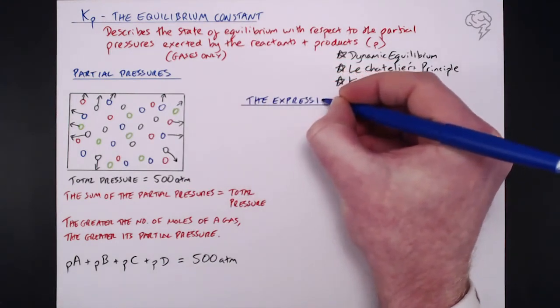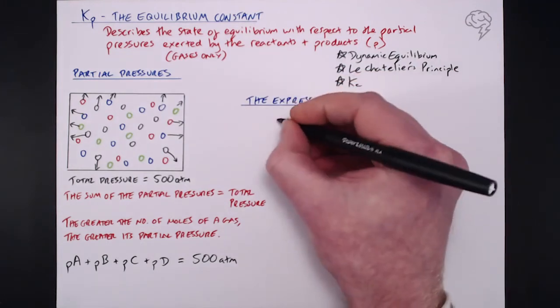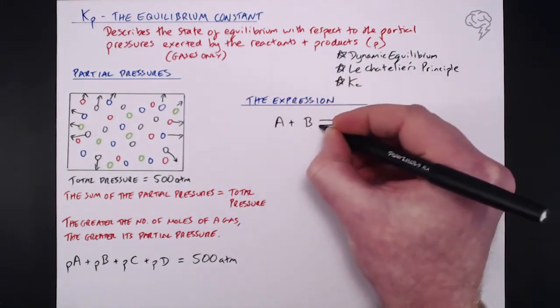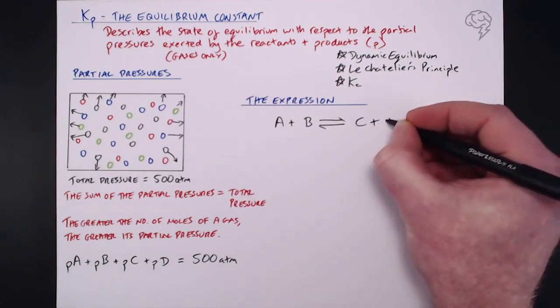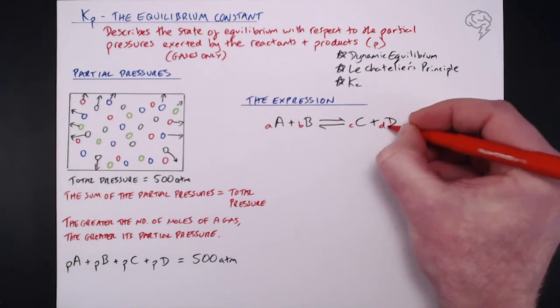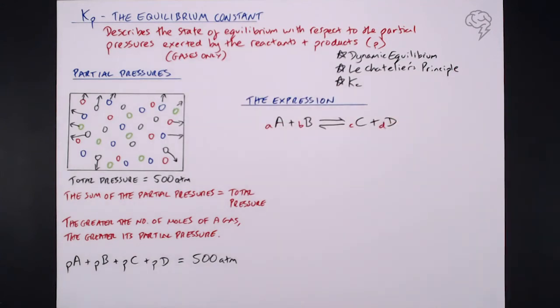Well, it's very similar to that for Kc. So let's take a standard equilibrium whereby we have all gases and we got A moles of A, B moles of B, C moles of C and D moles of D. As I just mentioned, these translate directly into the Kp expression, just like the values for concentration go into the expression for Kc. So it looks exactly the same.